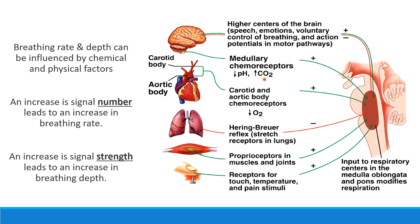The medullary chemoreceptors look for how much carbon dioxide is present in the blood or what's happening with pH. If blood carbon dioxide levels go up, this leads to a drop in blood pH — more carbon dioxide makes the blood more acidic. If the medullary chemoreceptors detect this drop in pH or increase in carbon dioxide, they send signals to the medulla oblongata to increase respiratory rate or depth. The chemoreceptors in our arteries — the carotid artery or the aorta — monitor oxygen levels. If oxygen in the blood drops, this also leads to an increase in the rate or depth of breathing.